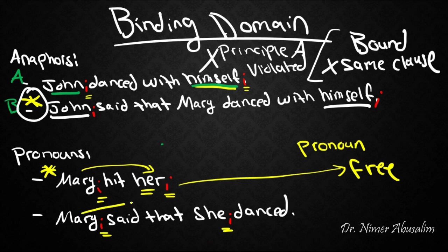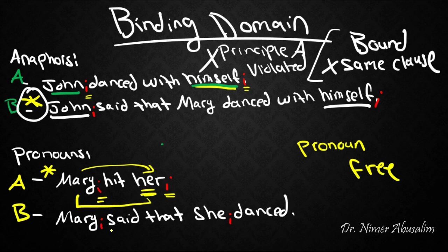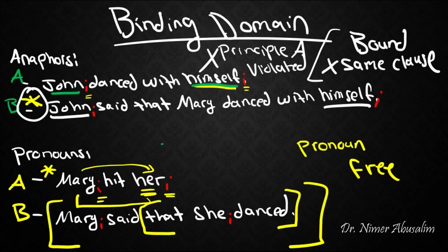In the second sentence, they are also coindexed and Mary c-commands the pronoun, but the sentence is grammatical. The pronoun is bound, which violates our initial Principle B, yet the sentence is still fine. Notice the difference: in sentence A the pronoun and antecedent are in the same clause, while in sentence B they are in different clauses — the antecedent is in the main clause and the pronoun is in the embedded clause.